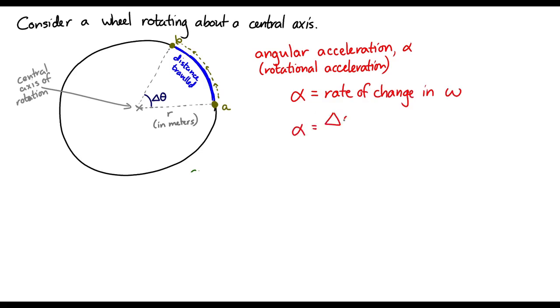And the angular acceleration is the rate of change in the angular speed. So we can come up with this equation. The angular acceleration is equal to the change in the angular speed divided by the time that it takes. It's the rate of change in the angular speed. The unit of angular acceleration would be radians per second squared. And we can come up with a relationship between the acceleration and the angular acceleration like so.